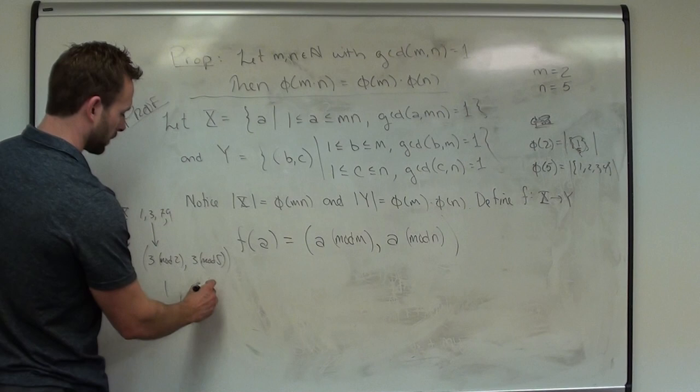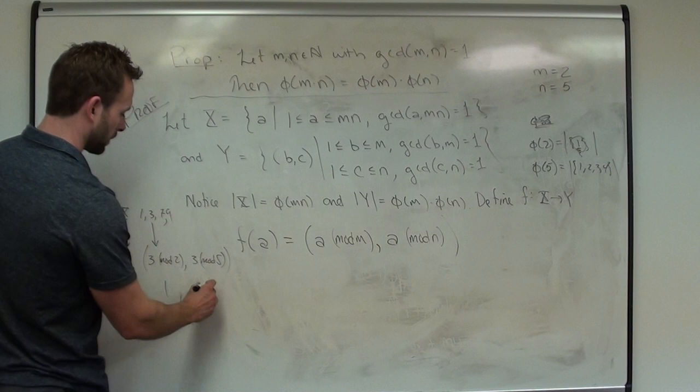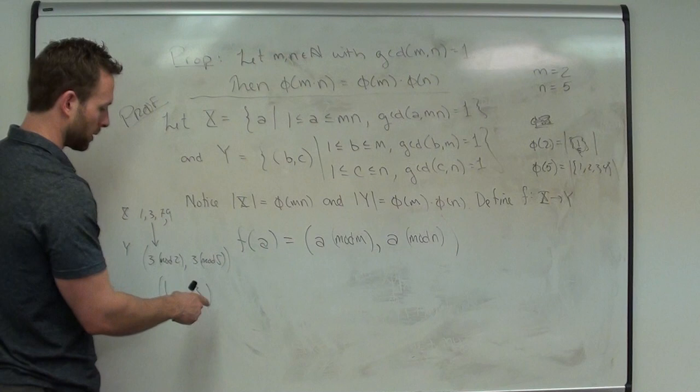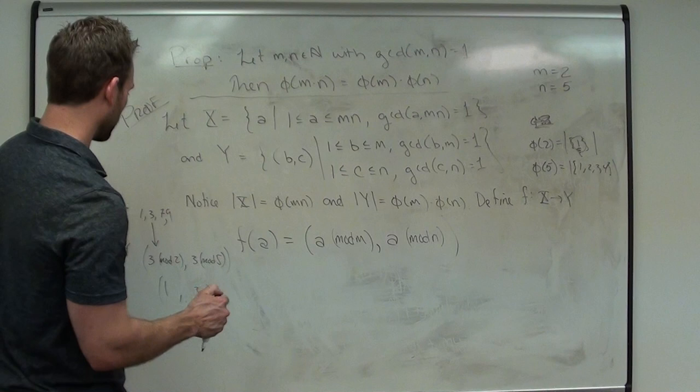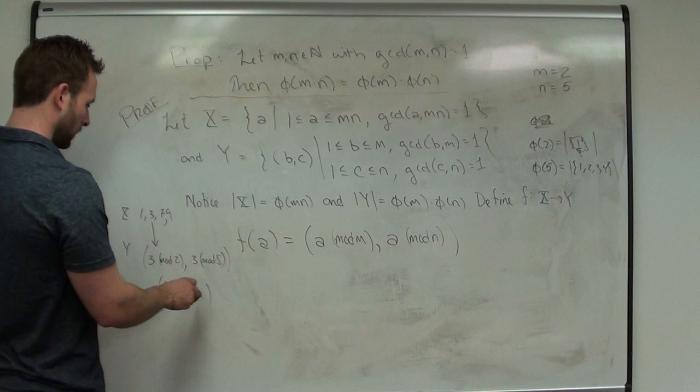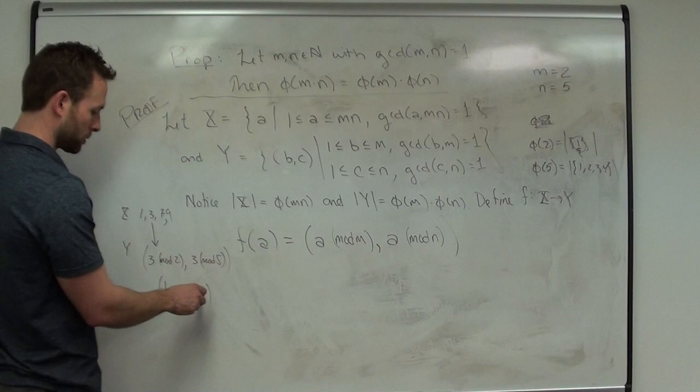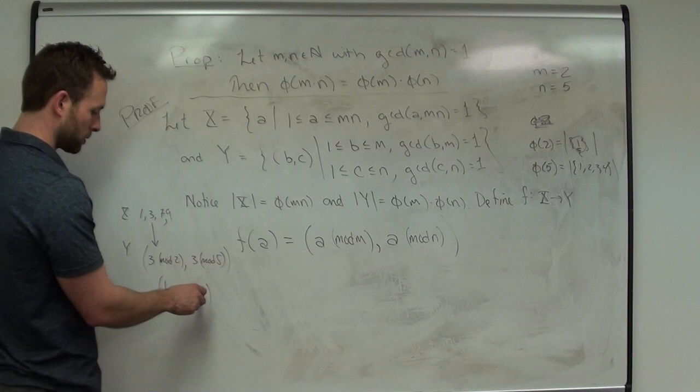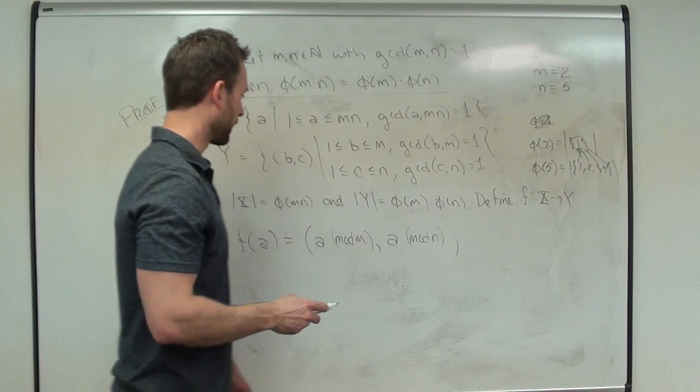In our example: 3 mod 2 = 1, 3 mod 5 = 3, so 3 maps to (1,3). 1 maps to (1,1). 7 mod 2 = 1, 7 mod 5 = 2, so 7 maps to (1,2). 9 mod 2 = 1, 9 mod 5 = 4, so 9 maps to (1,4). So we get the four pairs (1,1), (1,2), (1,3), (1,4). Our goal is to show that f is 1-to-1 and onto.